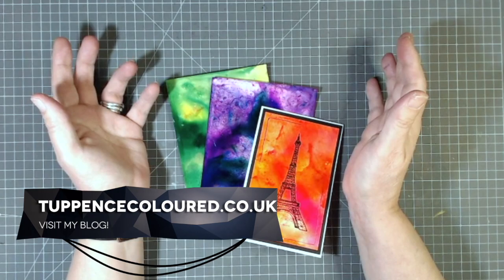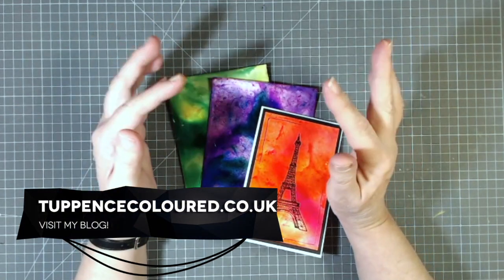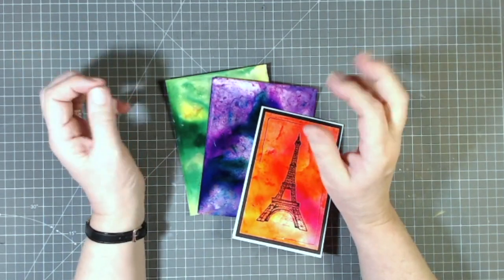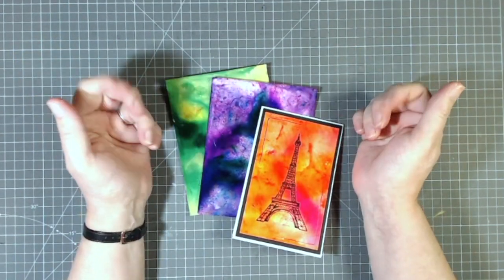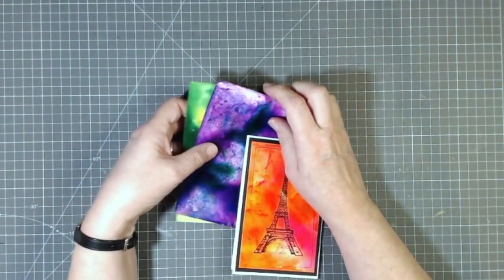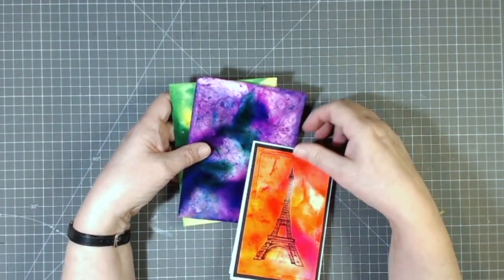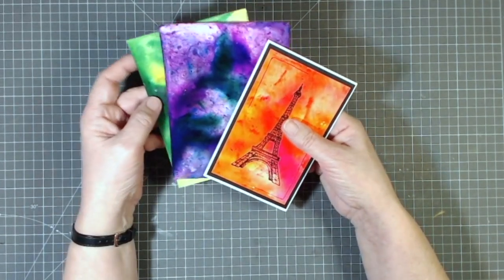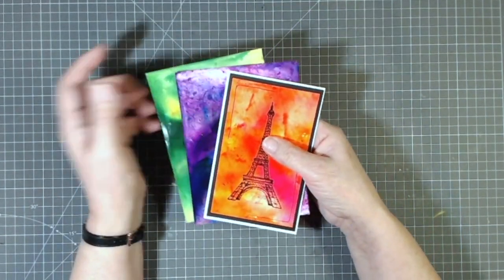I came across this technique in the Craft Stamper magazine using pigment powders, so I use Stampin' Up pigment sprinkles and inkjet photo paper. I thought that sounds very interesting so I'm gonna have a go at it and these are some of the results. Stay with me, I'll show you what I did.